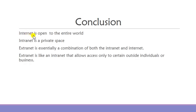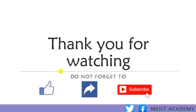Finally, internet is open to the entire world — it is a global network. Intranet is a private space, a private network. And extranet is essentially a combination of both internet and intranet — it is like an internet that allows access to certain outside individuals, combining both public and private network. If you have any questions, please feel free to drop them in the comment section. Thank you for watching — don't forget to like, share, and subscribe.